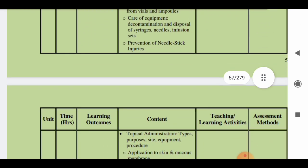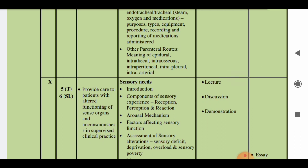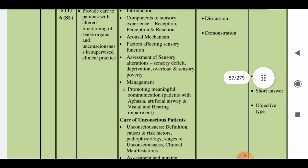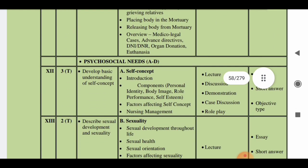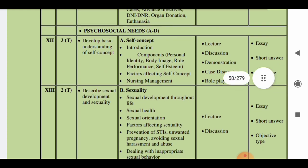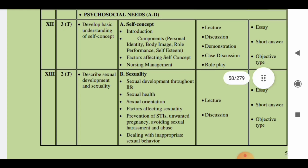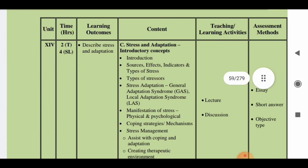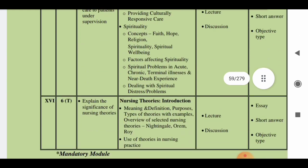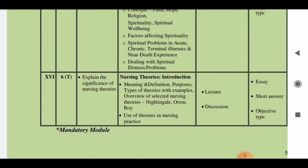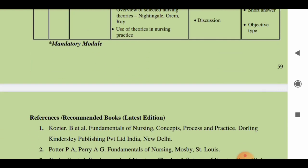The tenth unit covers sensory needs (5 hours theory and 6 hours skill lab). The eleventh unit explains care of the terminally ill, death and dying, stages of dying, and care of dead bodies. The twelfth unit is on psychosocial needs including self-concept (3 hours). The thirteenth unit covers sexuality (2 hours), the fourteenth is on stress and adaptation, the fifteenth is on concepts of cultural diversity and spirituality, and the sixteenth unit introduces nursing theories. There is also a mandatory module on Health Assessment that everyone must complete.